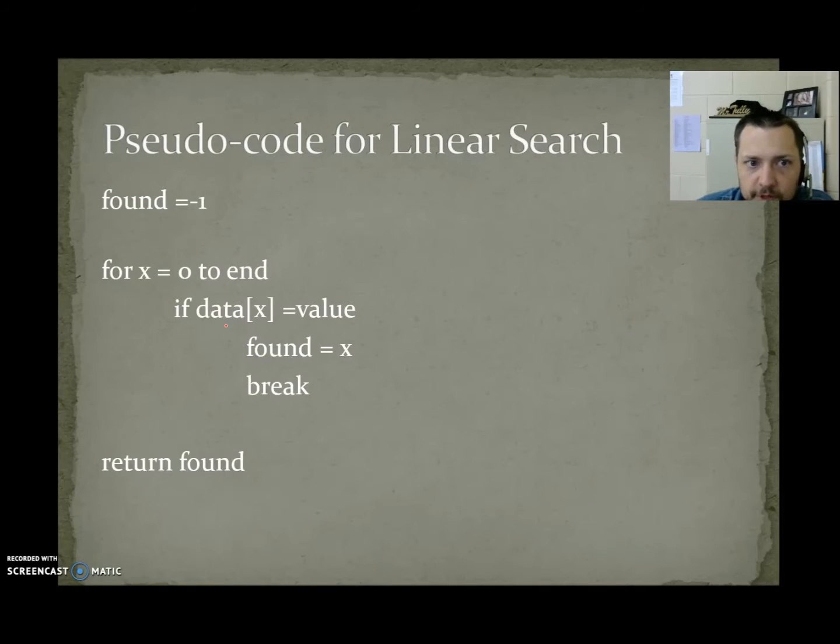The pseudocode for linear search. We start by assuming we're not going to find the value. Found equals minus 1. We do a for loop that will go through all the valid indexes, from 0 to the end. If the value at location x equals the value we're looking for, found equals that position, and then we break. So when we're outside the loop, found will either be the first location where we found the value, or if the value never got found, it'll still be minus 1.